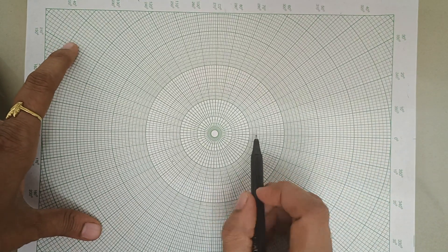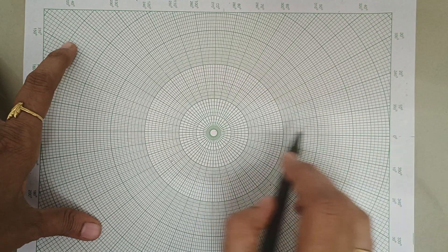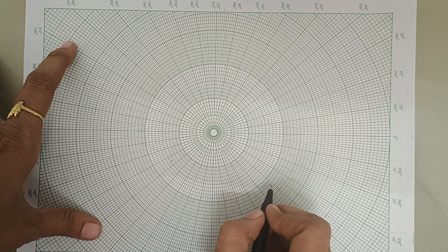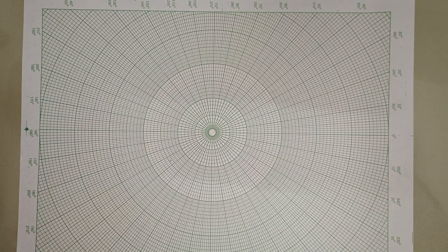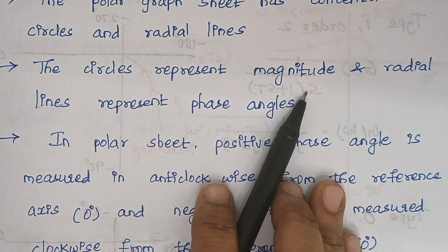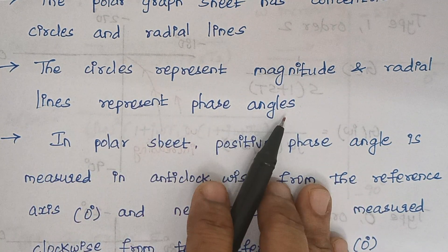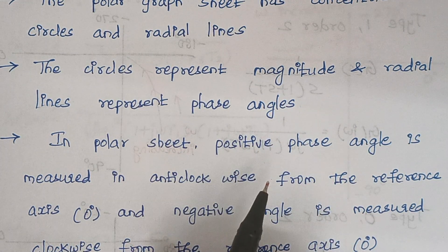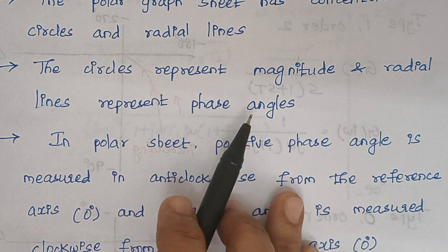Apart from the circles, we are having some radial lines. These lines radiate outwards, which is why we call them radial lines. The circles represent magnitude and the radial lines represent phase angles.